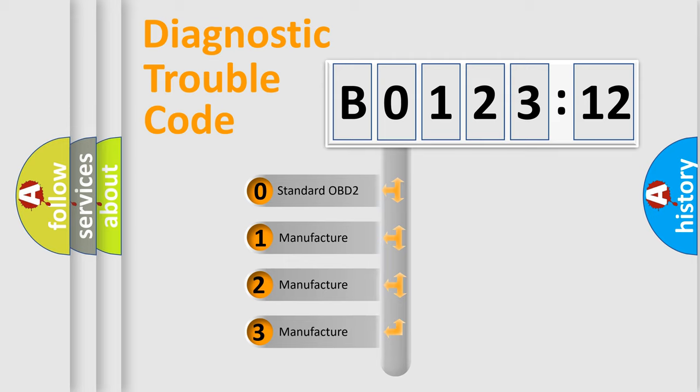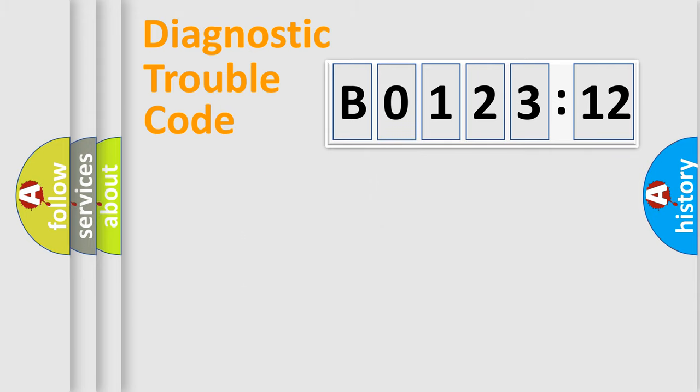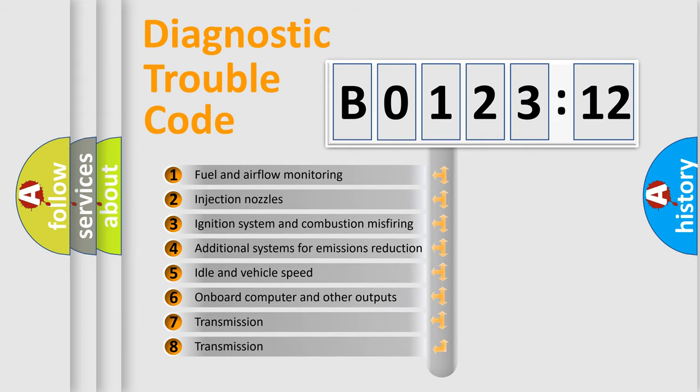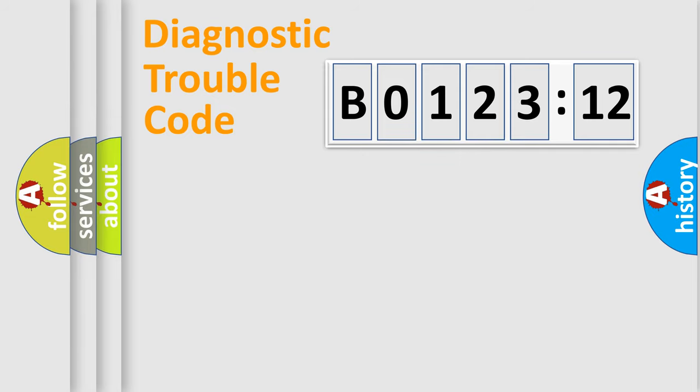If the second character is expressed as zero, it is a standardized error. In the case of numbers 1, 2, 3, it is a manufacturer-specific expression of the car-specific error. The third character specifies a subset of errors. The distribution shown is valid only for the standardized DTC code.